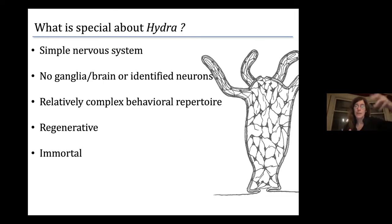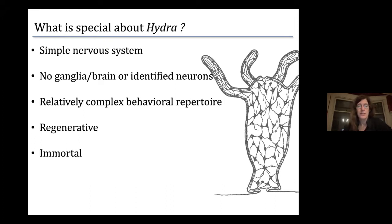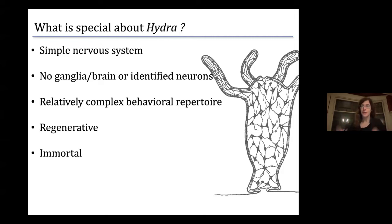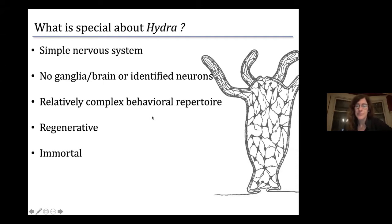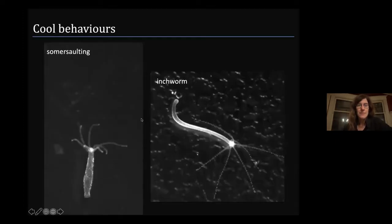New cells migrate outward and integrate themselves into the body while old cells get pushed off and eventually slough off the ends. All the cells in the body turn over about every two weeks. It's been shown that a single Hydra, if nothing disastrous happens in its environment, will persist for a very long time — it is the most functionally long-lived animal that exists. There have been Hydra maintained for tens of years, which is way off the curve for something so small.